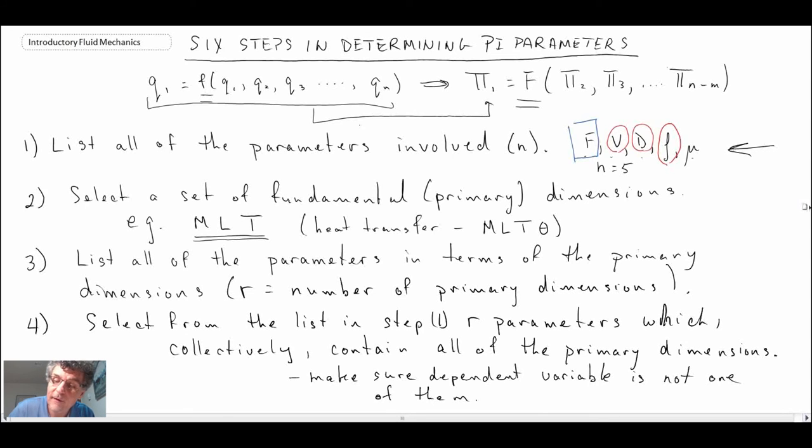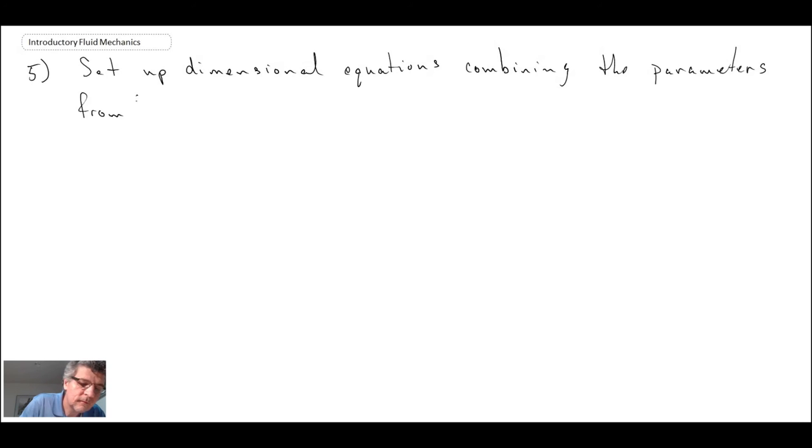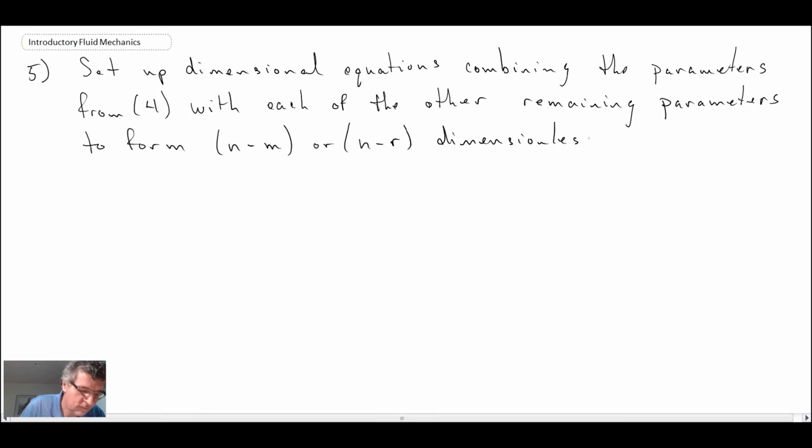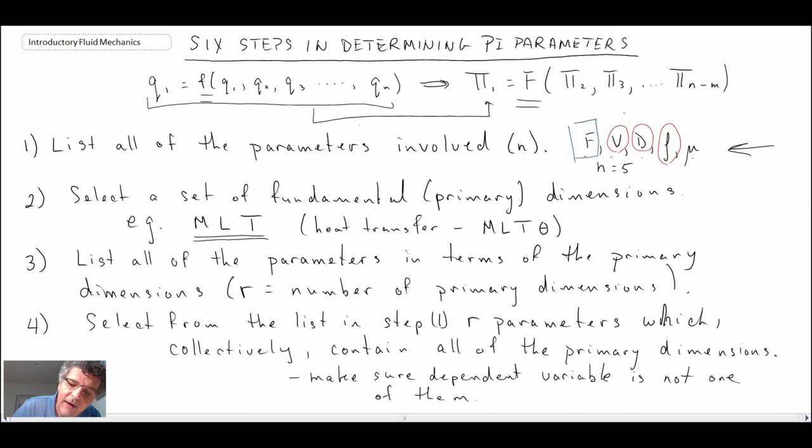Step five is to set up dimensional equations. From an earlier segment you remember we talked about dimensional homogeneity. Essentially what we're going to be doing is setting the dimensions of our pi parameter equal to zero, and then we get a number of equations, a number of unknowns. This is probably the funnest part of Buckingham pi because you get to solve these equations and then you get your exponents. I'll show you in the example in the next segment what I'm talking about. Another thing that can sometimes be confusing: we had r being the primary dimensions and then I have this m. What the m is referring to would be m equals three in this particular example, so it refers to the cluster of variables that you pull out for step four.